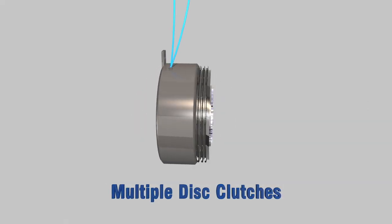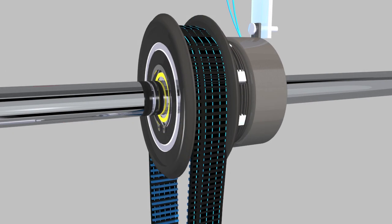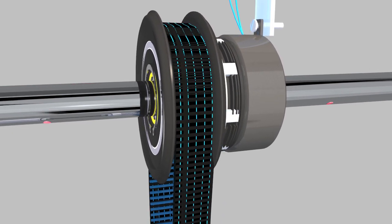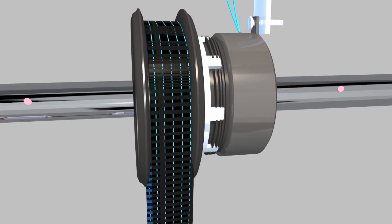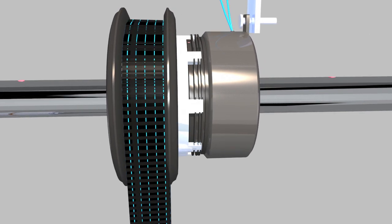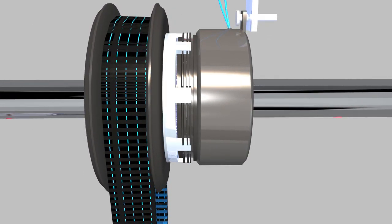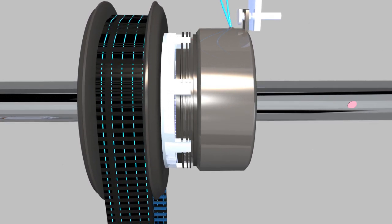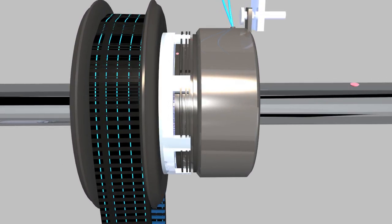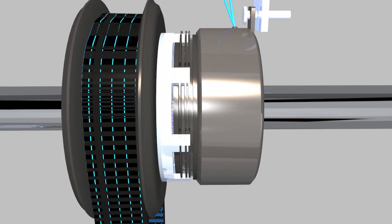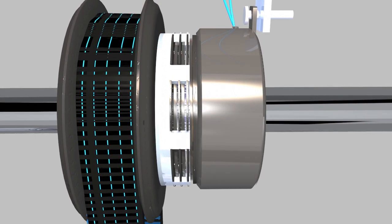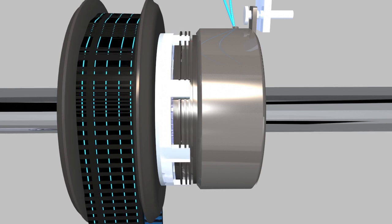Multiple disc clutches are used to deliver extremely high torque in a relatively small space while still retaining the ability to engage and disengage at speed and under load. These clutches can be used dry or in an oil bath. Running the clutches in an oil bath also greatly increases the heat dissipation capability.